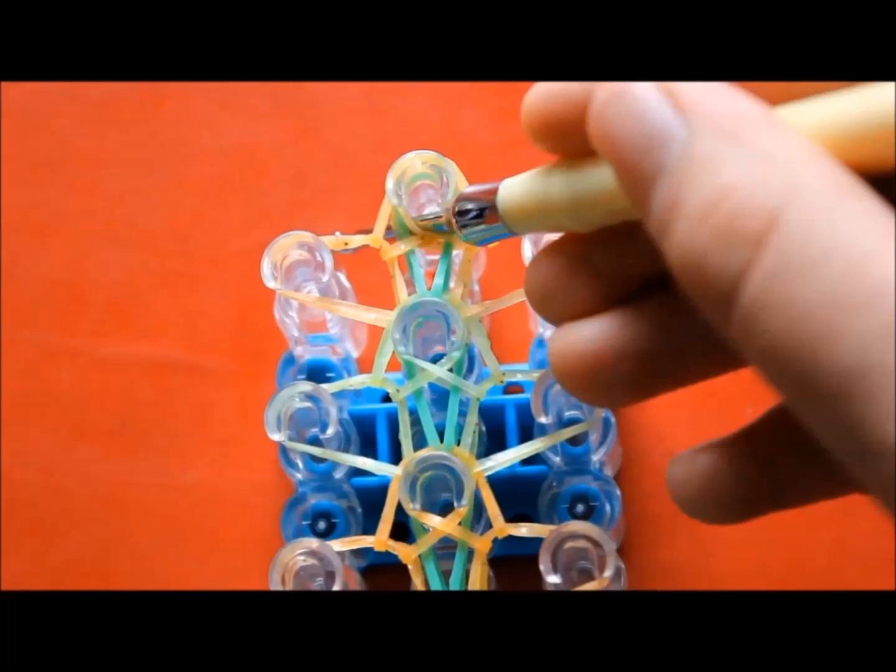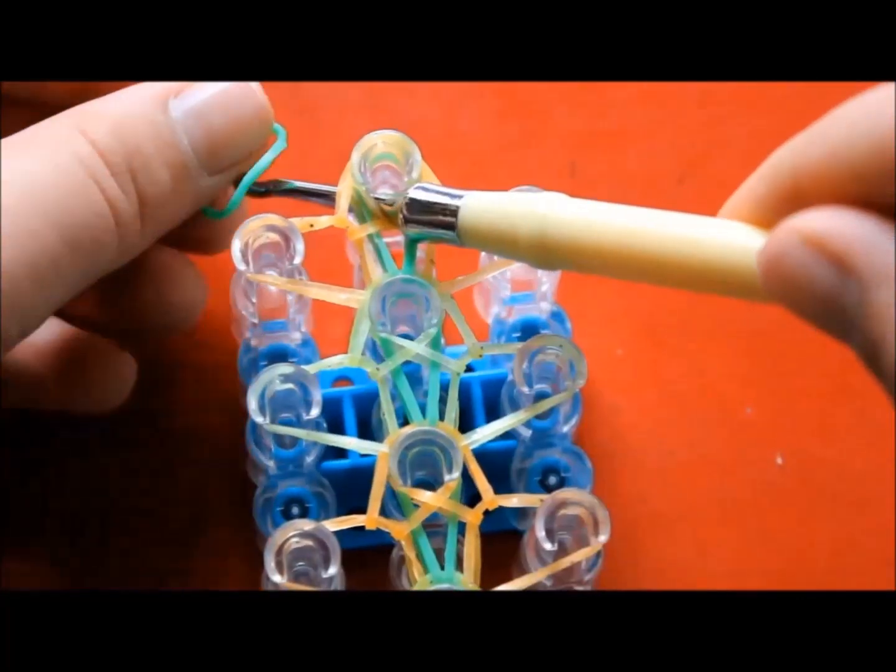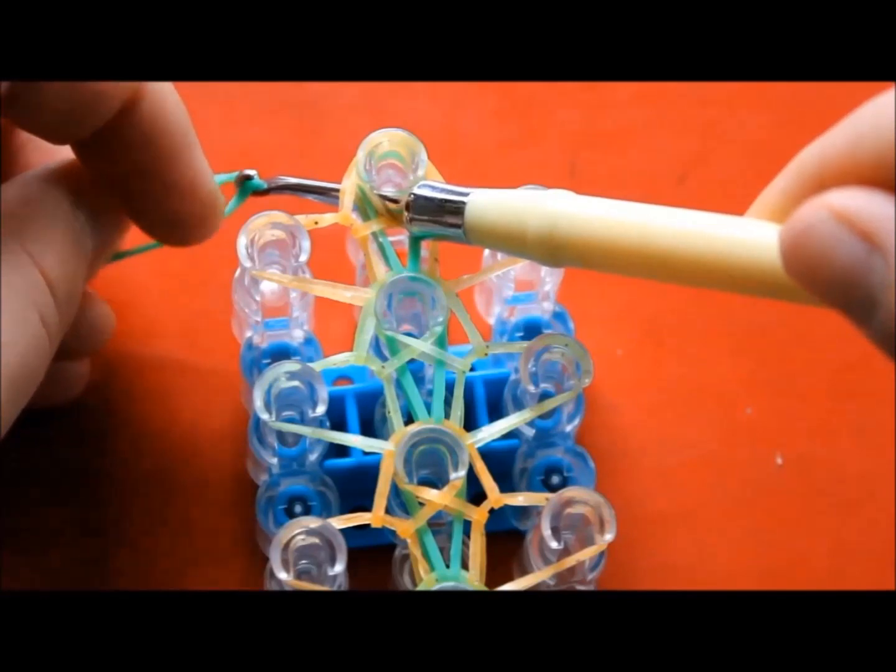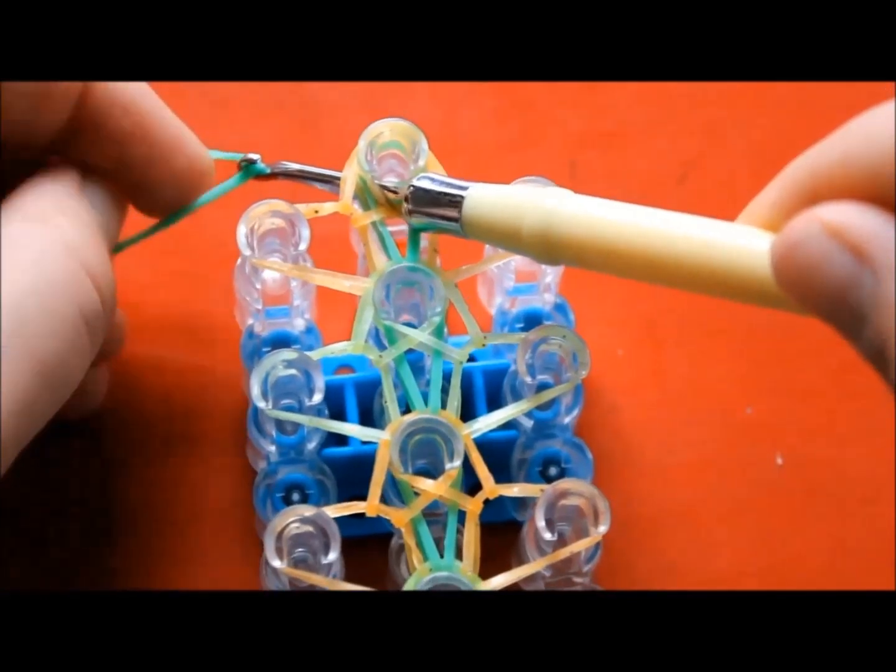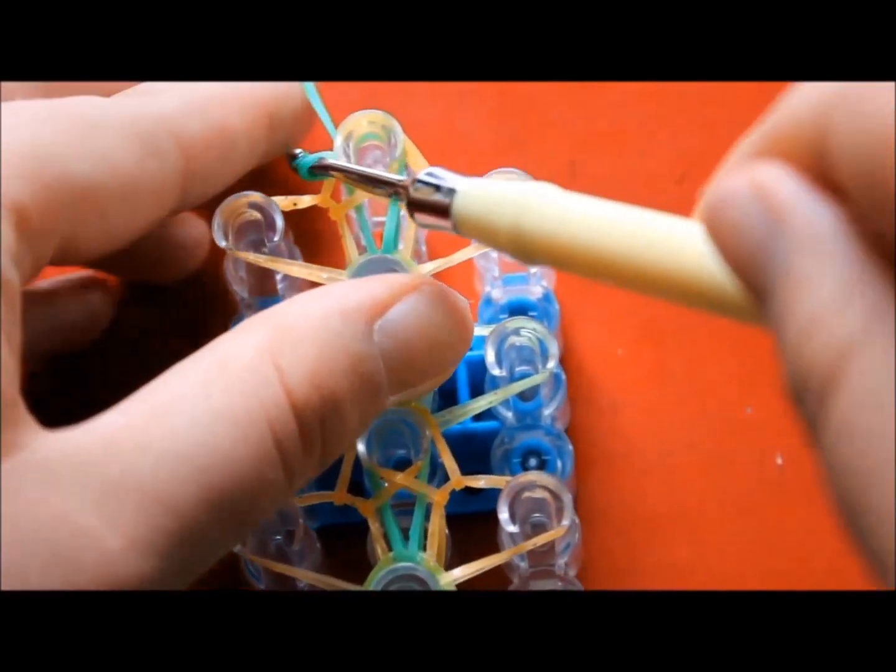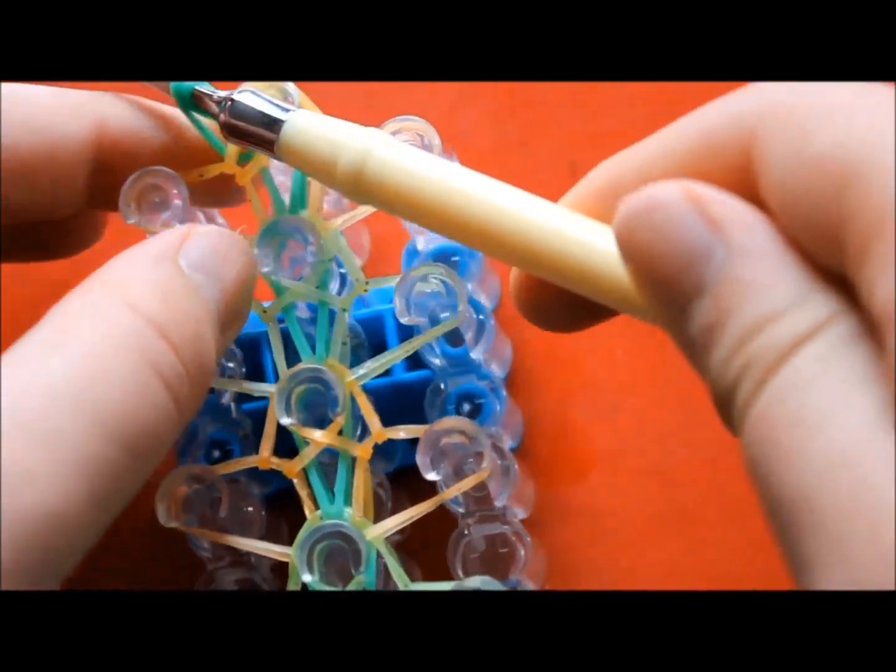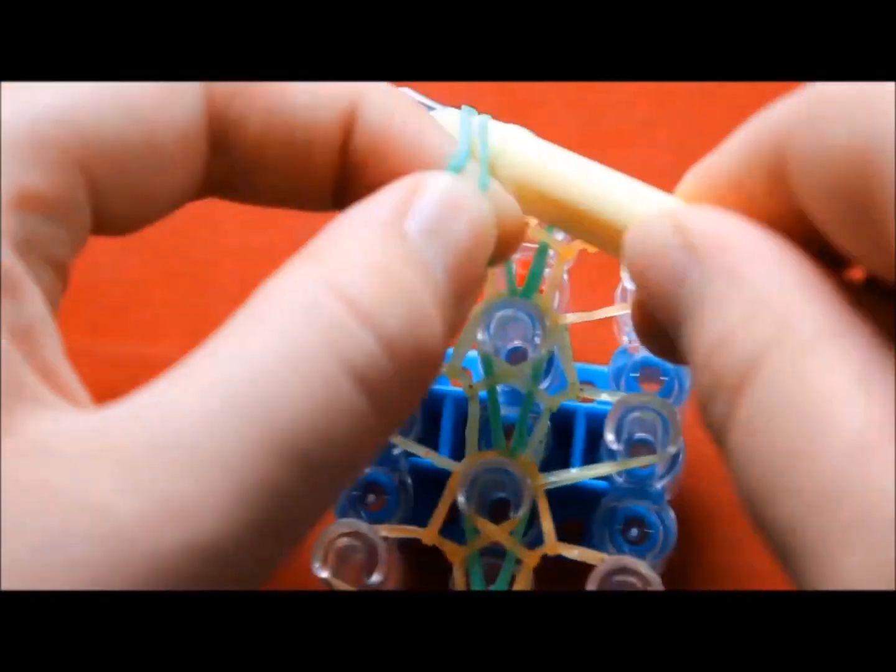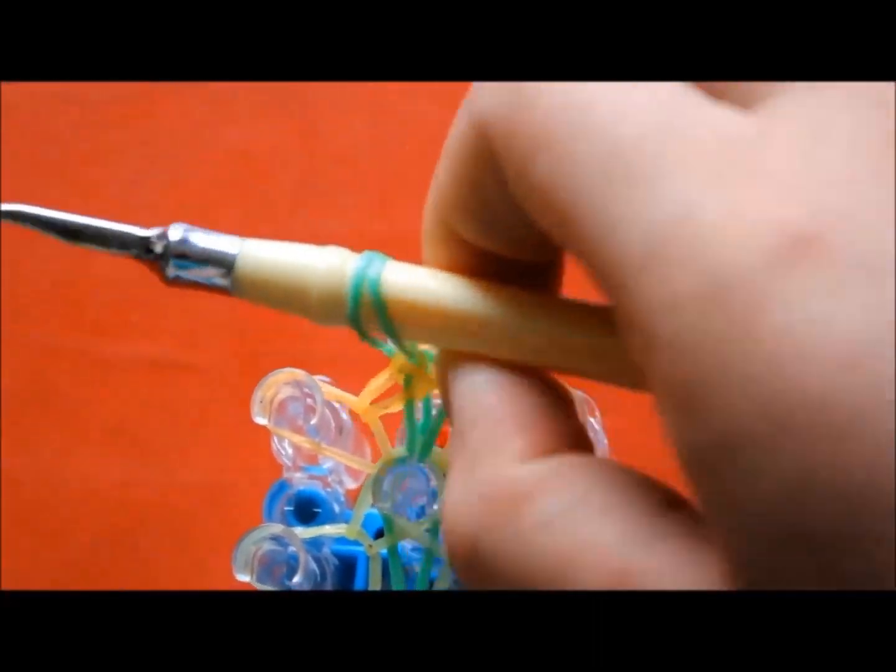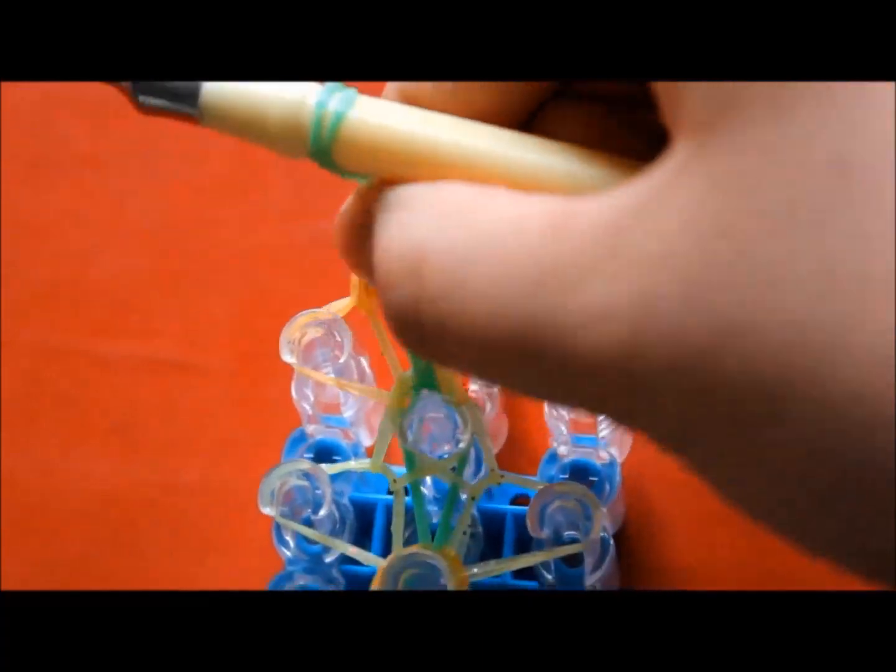Now you can finish the bracelet. Slide your hook down through all these bands. Then grab a band of your first color and place it on the end of the hook. And slide the hook back through these bands and move this band to the thickest part of the hook. Then pull the bracelet off of the loom.